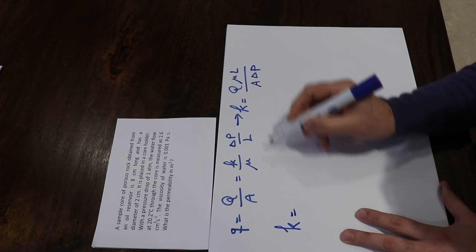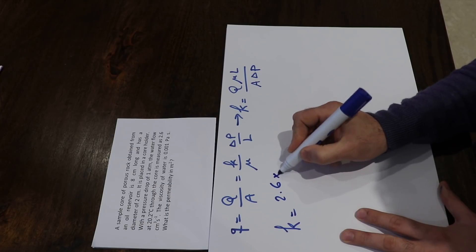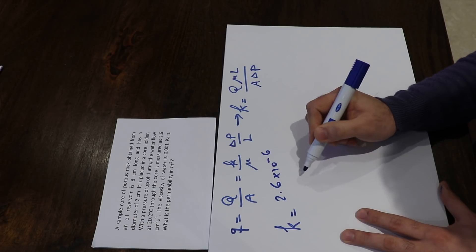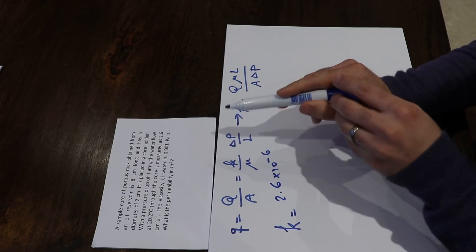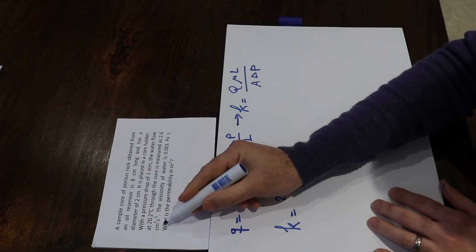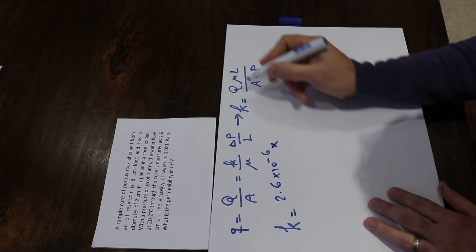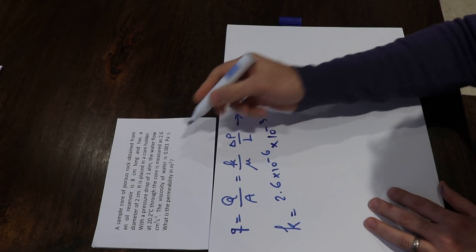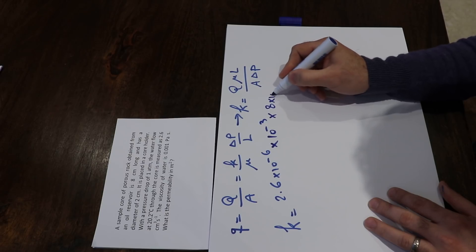K equals 2.6 times 10 to the minus 6 (that's Q = 2.6 multiplied by 10 to the minus 6 to convert centimeters to meters), times μ, which is 10 to the minus 3 as given in the question, times L, which is 8 centimeters or 8 times 10 to the minus 2 meters,